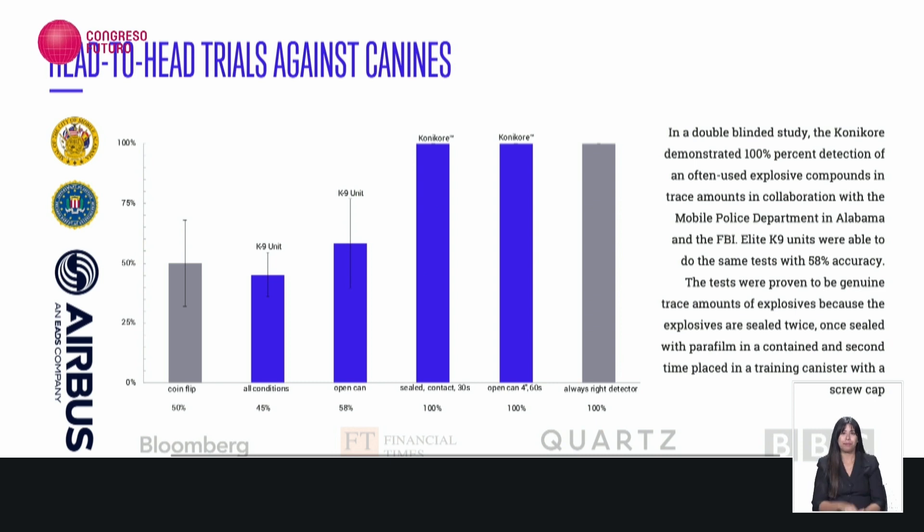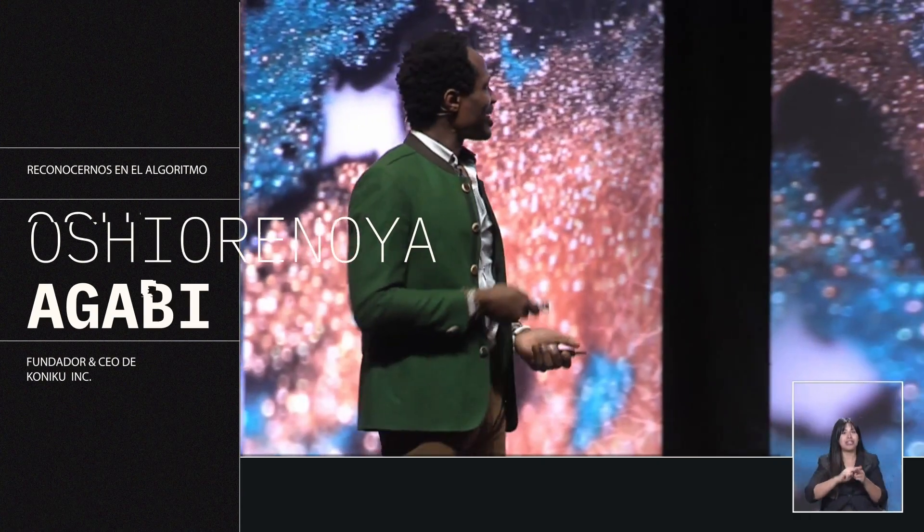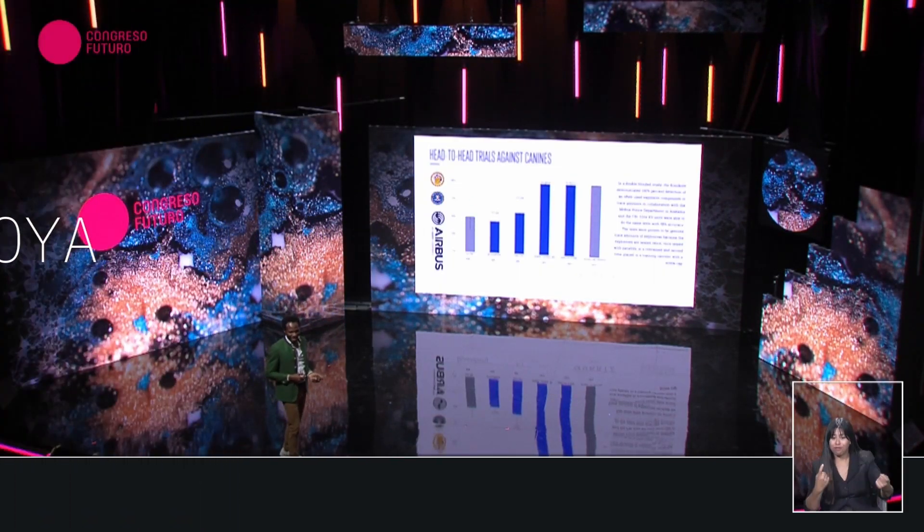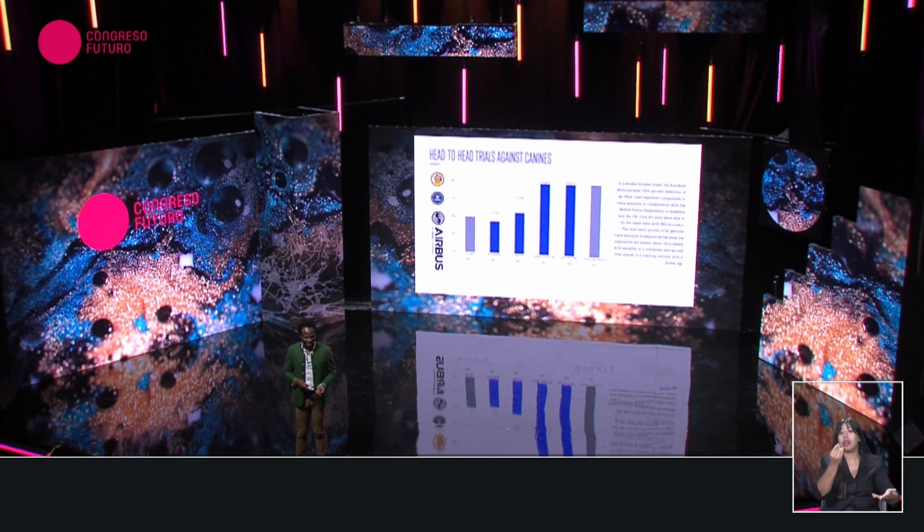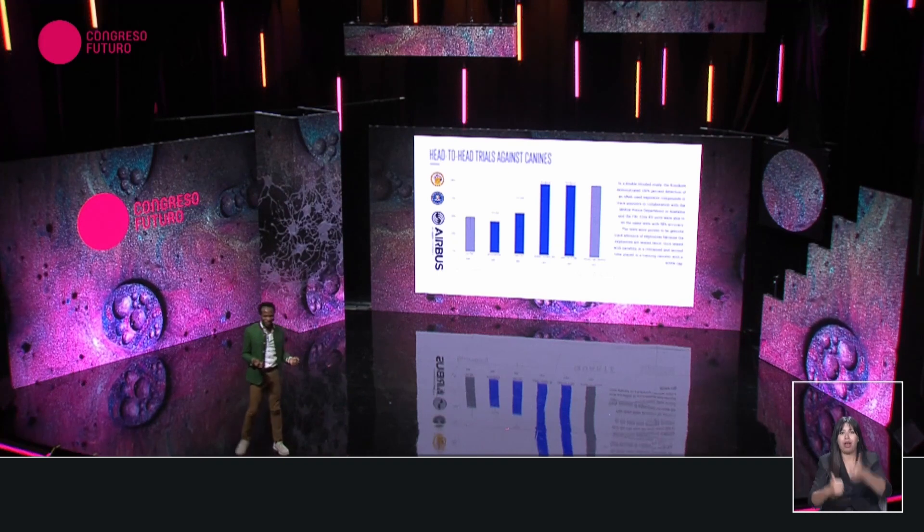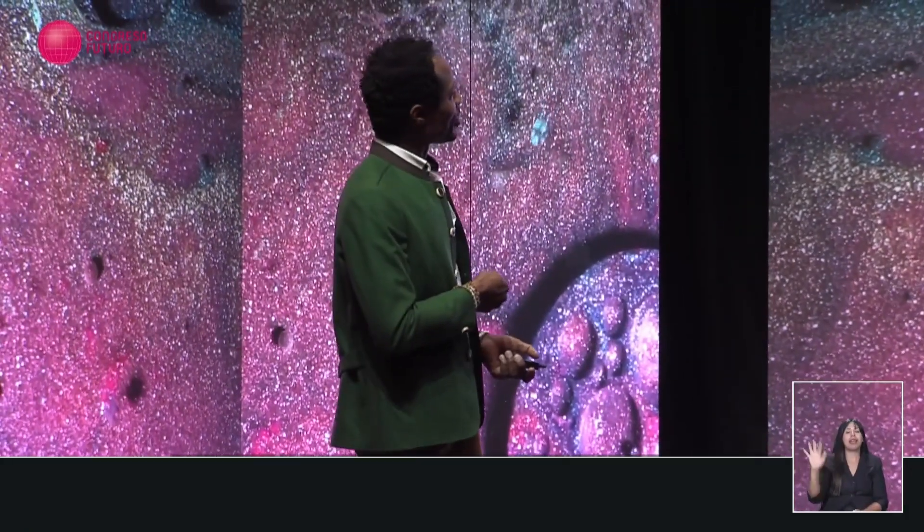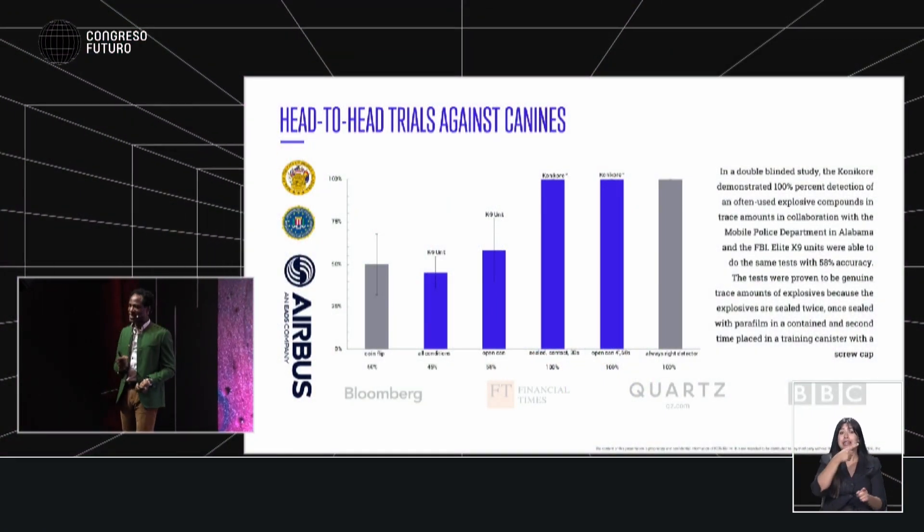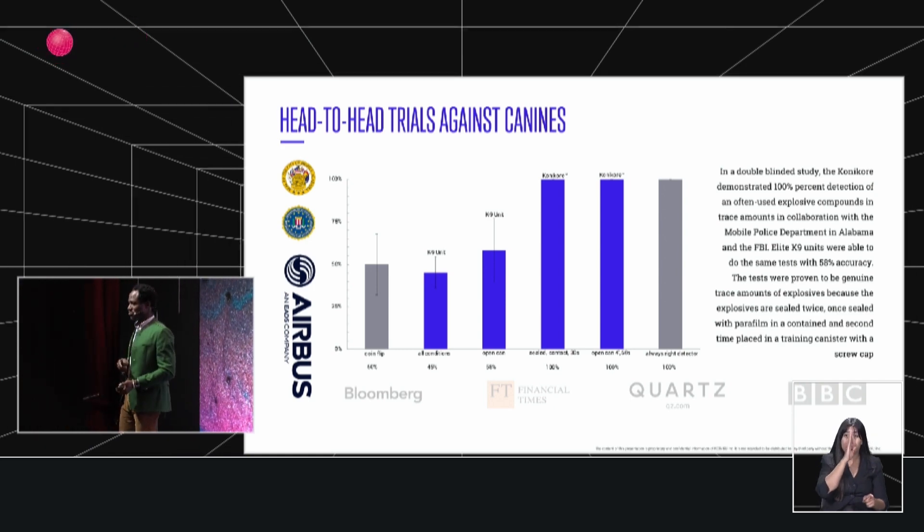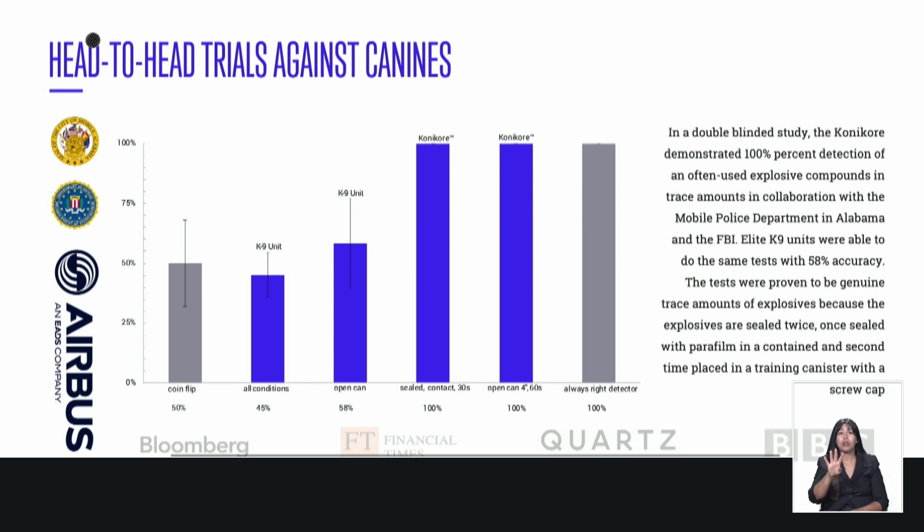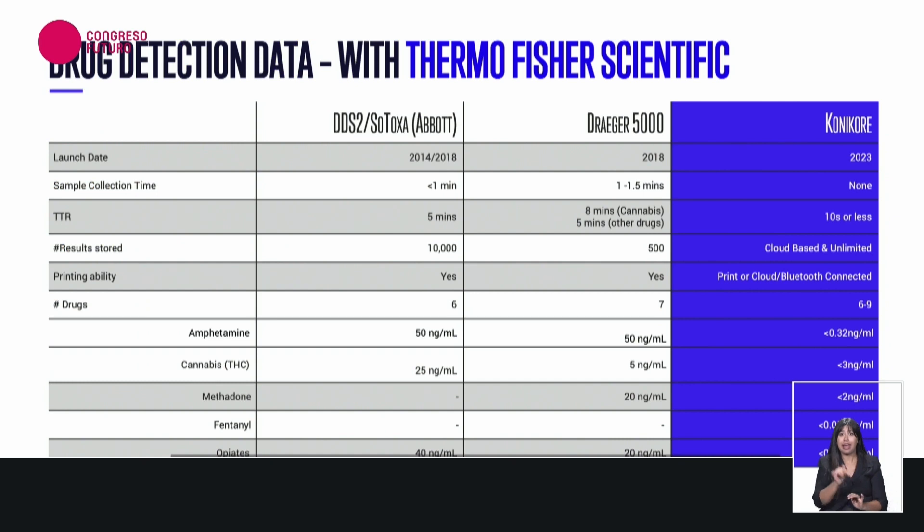So we've genetically engineered cells. We've built a chip that allows you to put this technology on a machine. We've demonstrated it in the lab, so we decided to take it to the field and do a competition head-to-head with the dog, with the actual dog. Out of 114 trials with the FBI and the mobile police in Alabama, how do you think we did? The dog was detecting at a 54 to 58% accuracy. Out of 114 trials, we did not miss a single false positive or a single false negative using our technology stack. And this is a double-blind deployment.